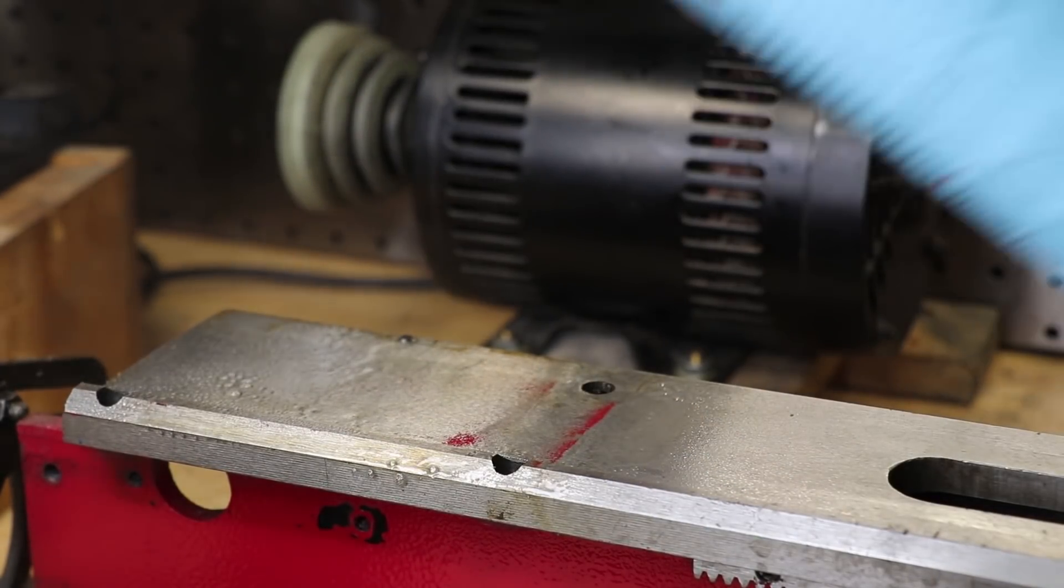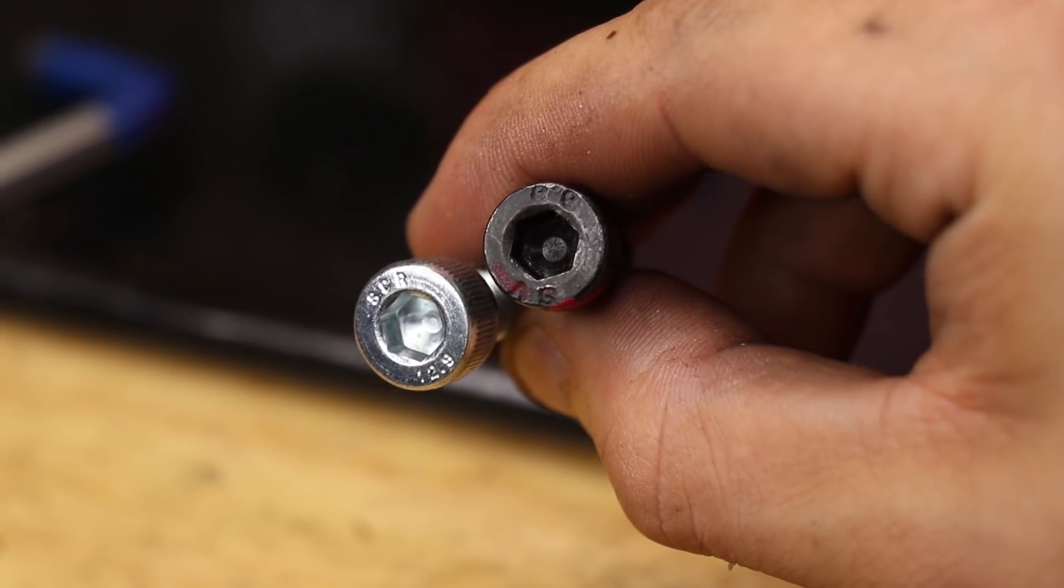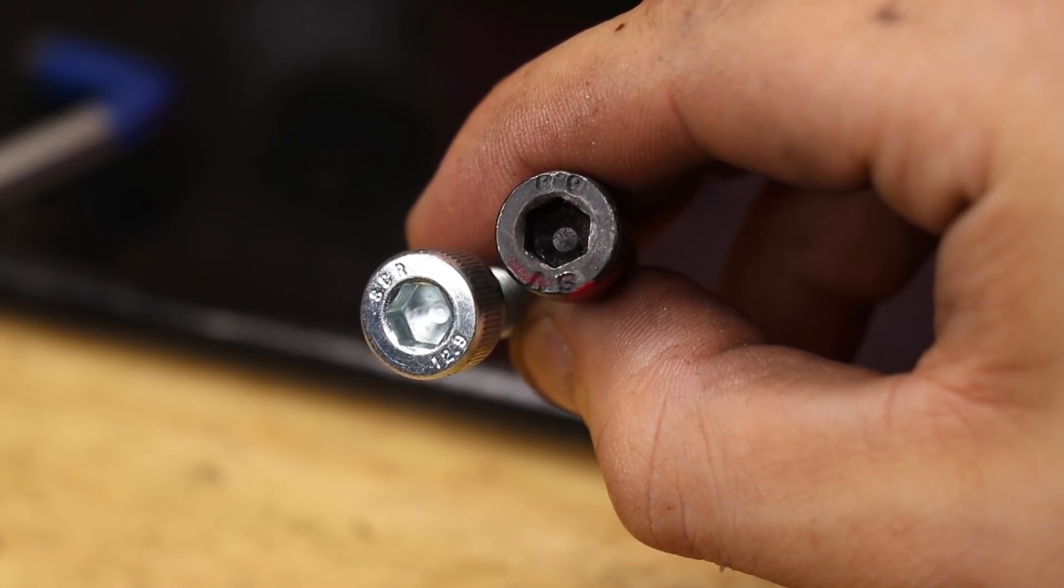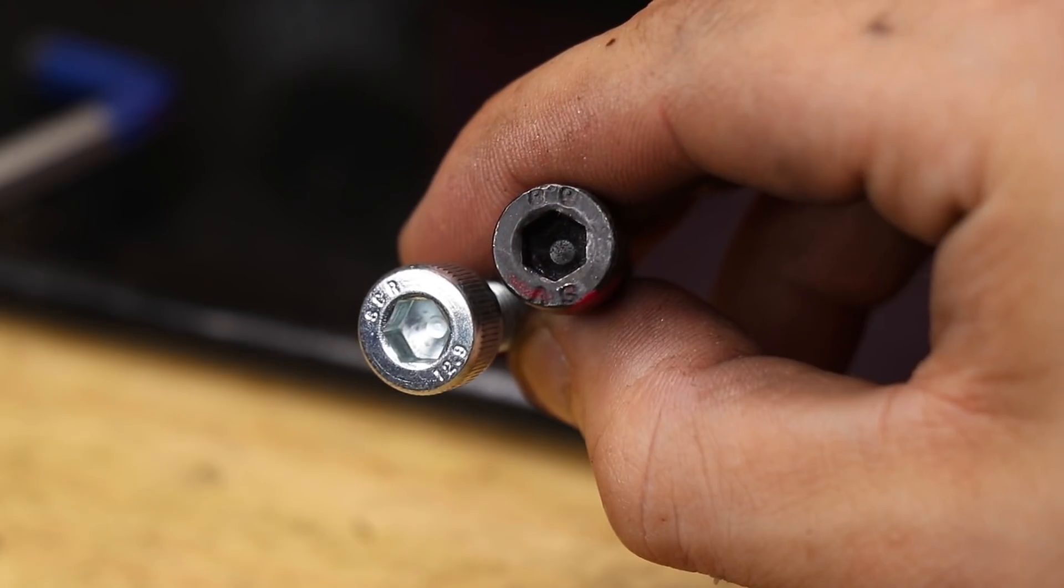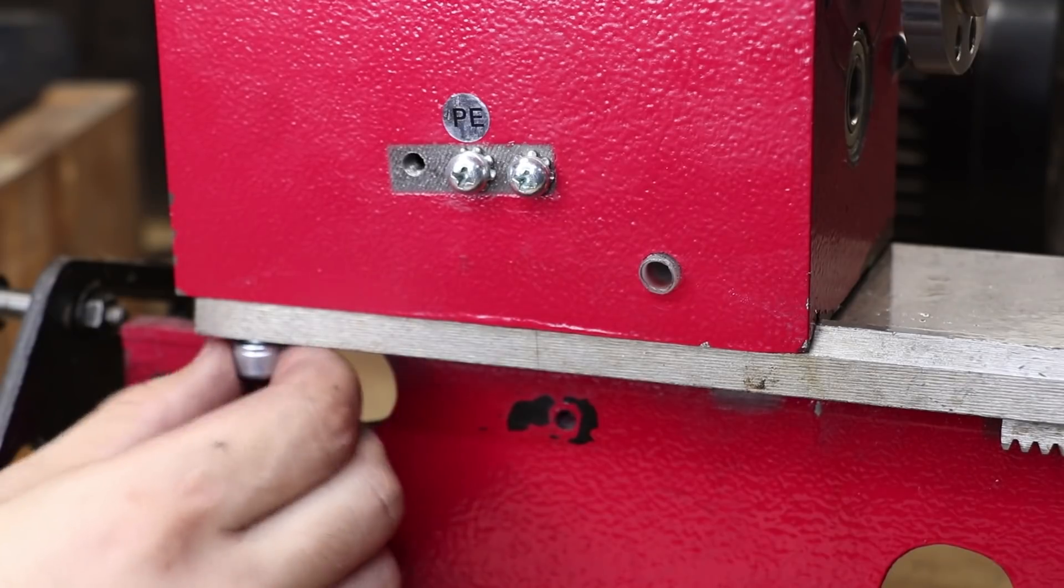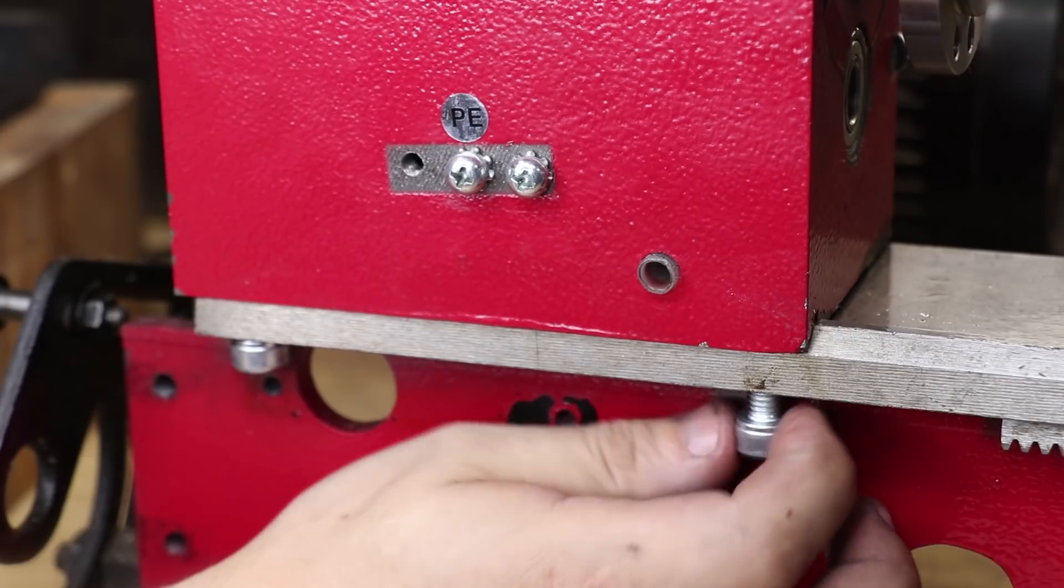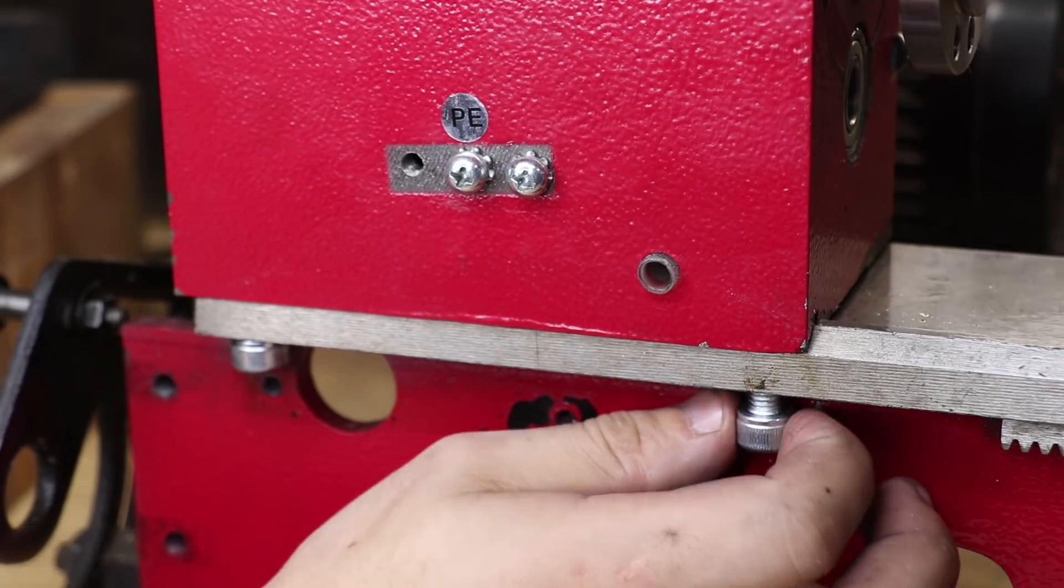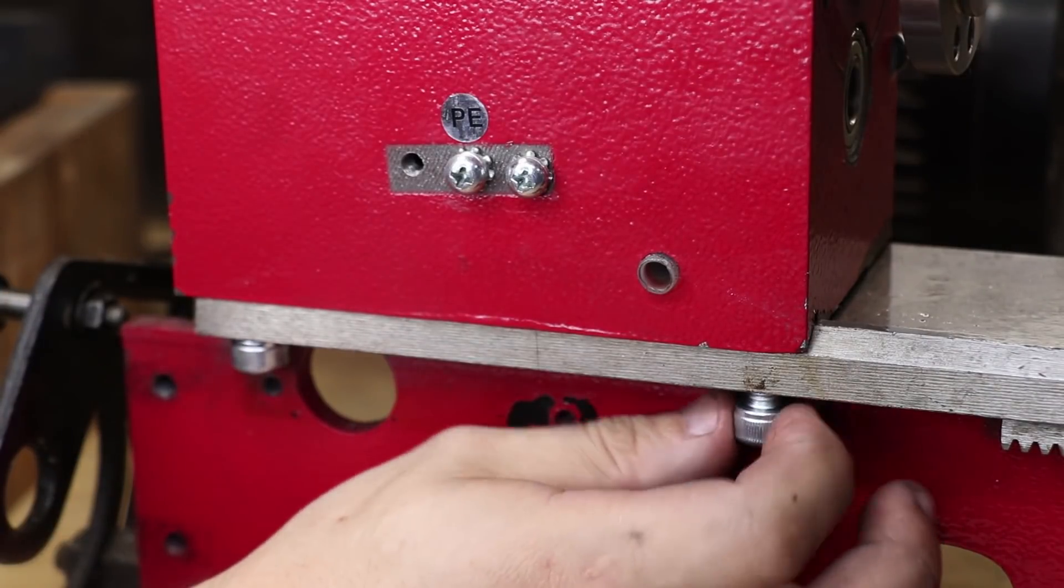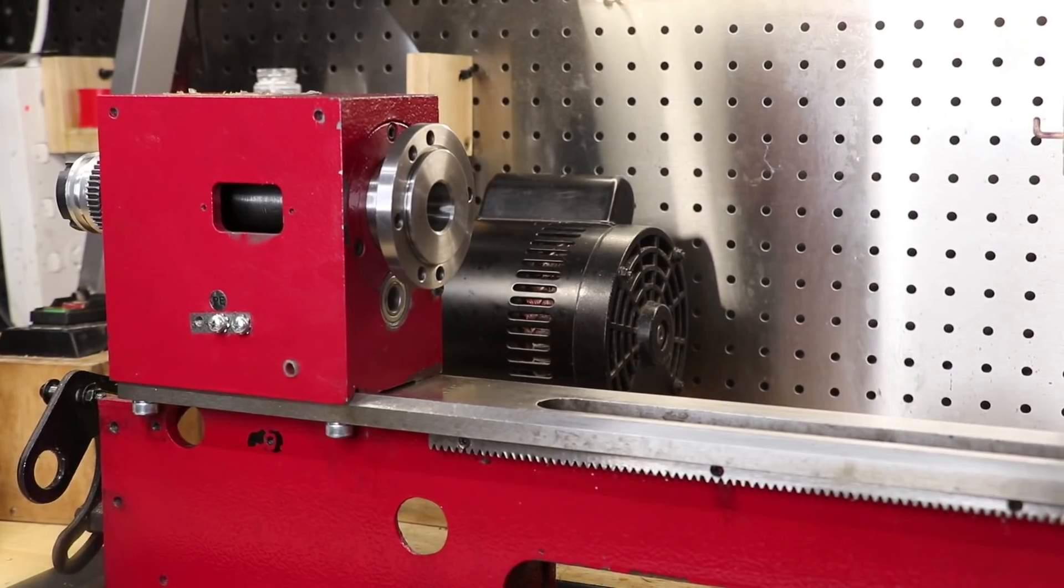Now while I was putting the headstock back on, I decided to replace the factory cap head screws. These factory ones are 8.8 grade, but I'll swap them out for some 12.9 grade bolts. The difference may be a little bit hard to notice, and it might be a little bit overkill, but these are the bolts that are holding the headstock to the lathe, and two dollars worth of cap head screws are an easy upgrade, and I think they're worth it.